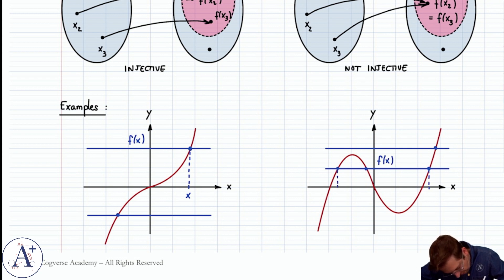and there are three pre-images. There are three values, x1, x2, and x3, that are distinct and give you the same image. And therefore, this cannot be the graph of an injective function.